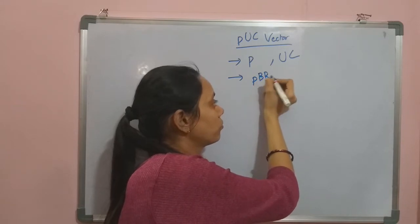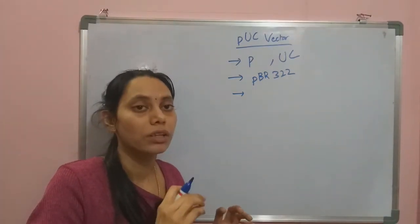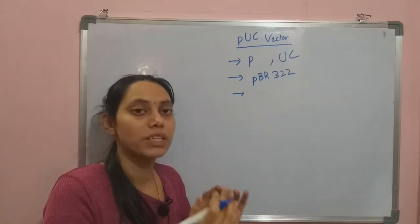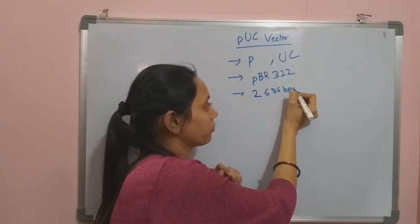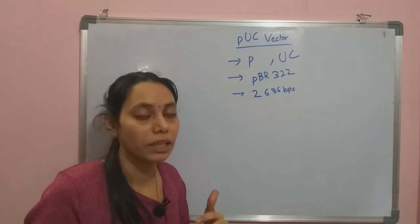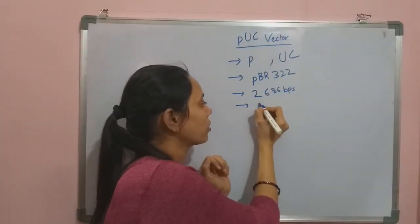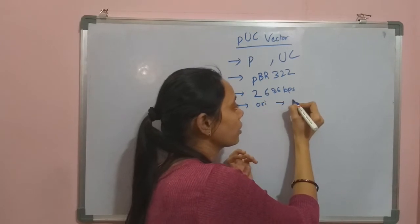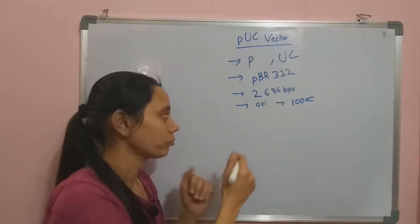PUC vector is derived from PBR322. The major difference is that in PBR322 many sequences and regions got deleted, so the size of the plasmid is very small — only 2686 base pairs in length. The origin of replication from PBR322 is manipulated in such a way that PUC vector possesses a high copy number of more than one hundred.